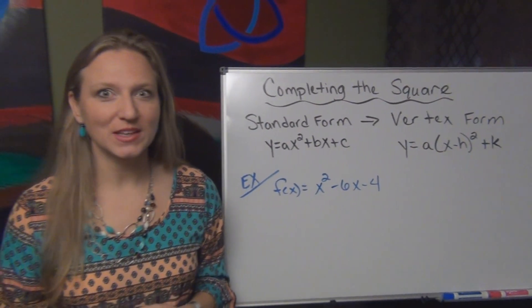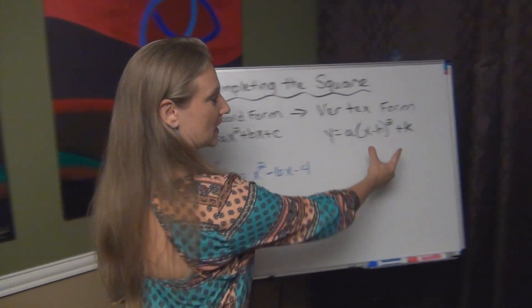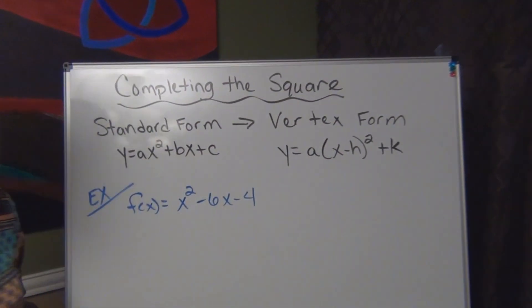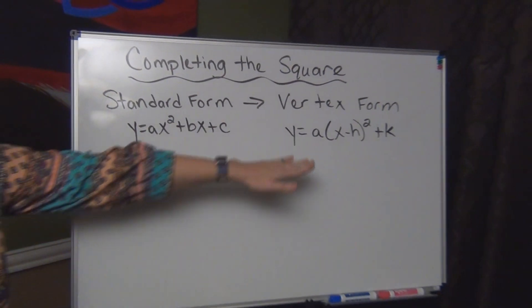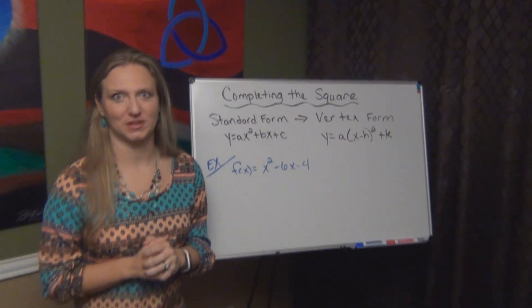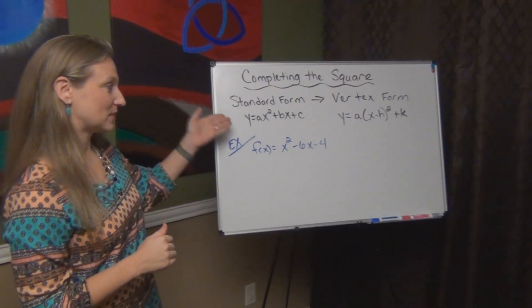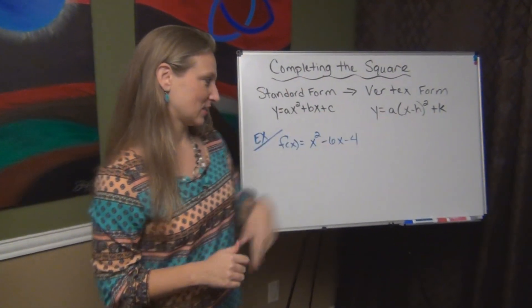Remember vertex form is really helpful if you are graphing because h and k gives you the vertex, so it's much easier to be able to graph it when it's in vertex form. So here is how to complete the square so that you can get it from standard form into vertex form.